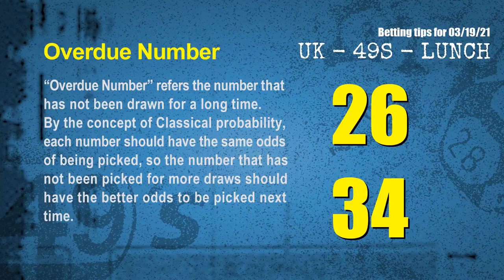The final information for you is overdue numbers. An overdue number refers to a number that has not been drawn for a long time. Also by the concept of classical probability, the number that has not been picked for more draws should have better odds to be picked next time. After counting thousands of results, we find the most overdue two numbers for you, which are 26 and 34.